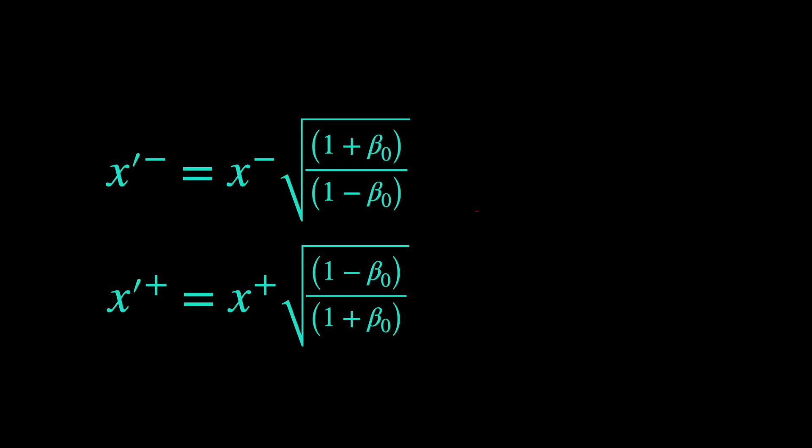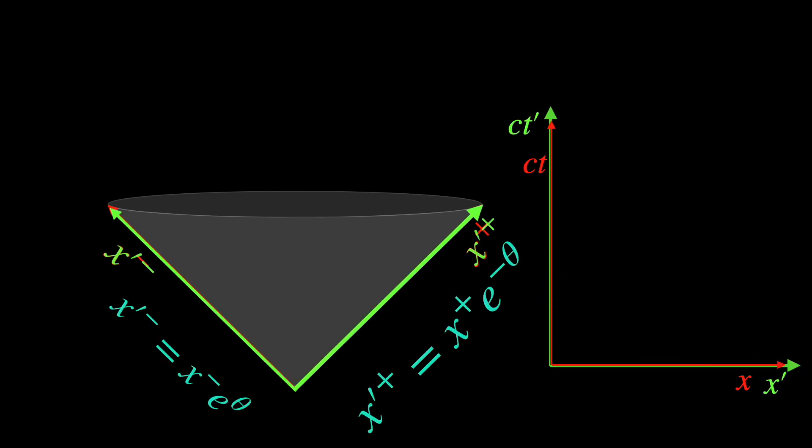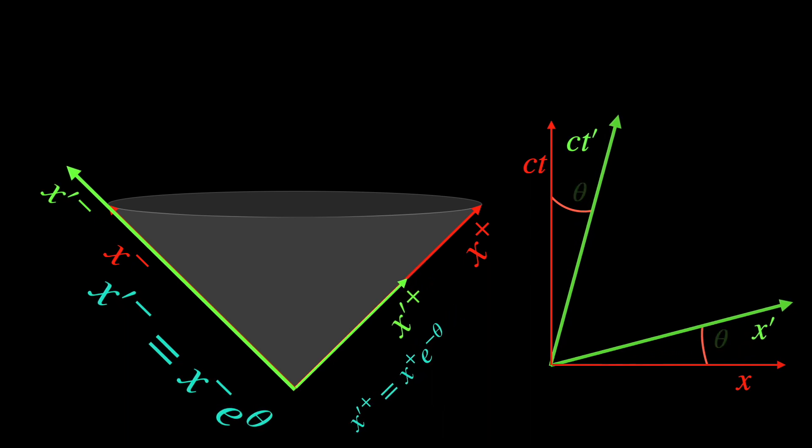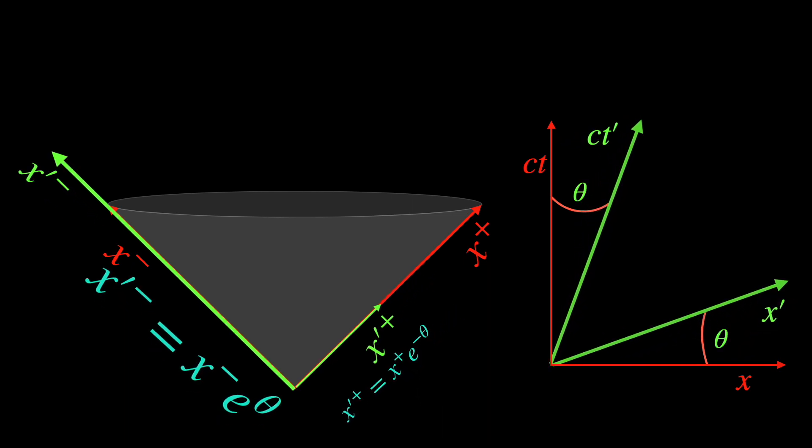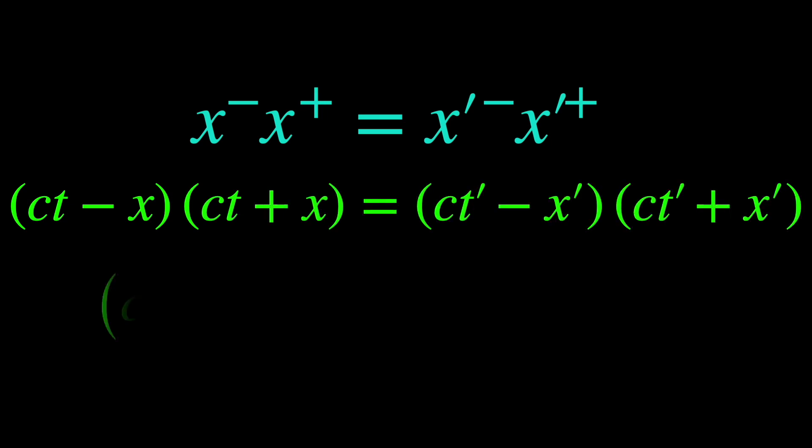Using the same parameterization with the hyperbolic angle theta we have used to write beta 0 as tanh of theta, the constant factor with x minus, that is square root of 1 plus beta 0 upon 1 minus beta 0, becomes exponential of theta, a constant greater than unity. So the x minus variable gets stretched by the factor exponential theta due to Lorentz transformation. Correspondingly, the x plus variable gets compressed by the inverse factor exponential of minus theta. So instead of rotation of the spacetime coordinate axis, the light cone coordinate axis just gets stretched and compressed due to Lorentz transformation. The combined effect of this stretching and compressing is to keep the product x minus x plus invariant, which is nothing but what we already know as the finite spacetime interval.